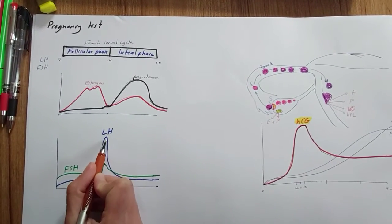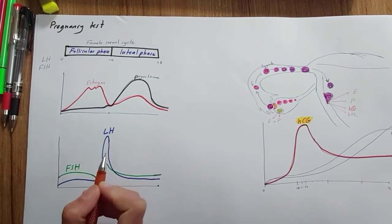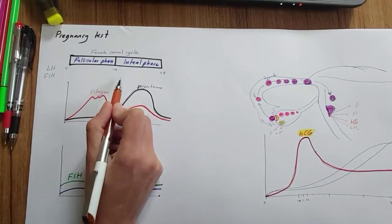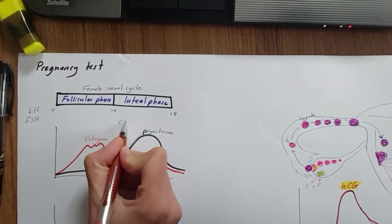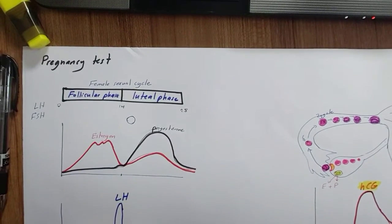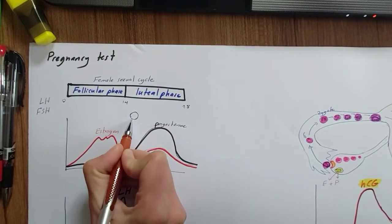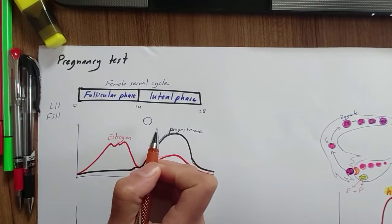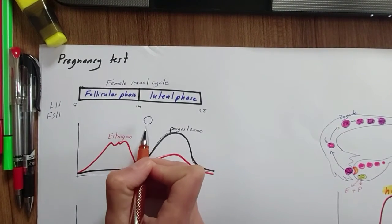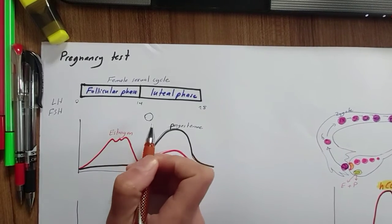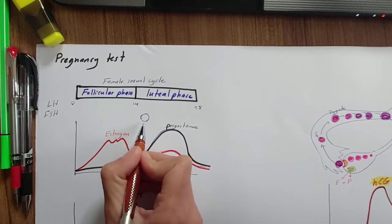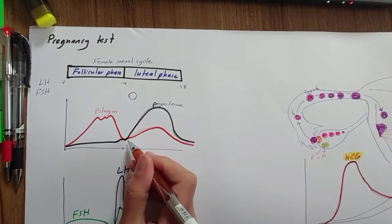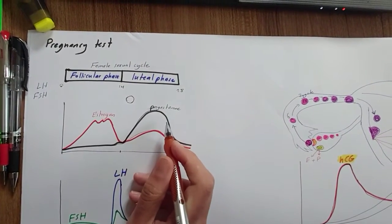A sharp increase in LH is necessary for ovulation, and so one ovum is released into the fallopian tube. The remaining cells, called lutein cells, become the corpus luteum and start secreting increased amounts of estrogen and progesterone.